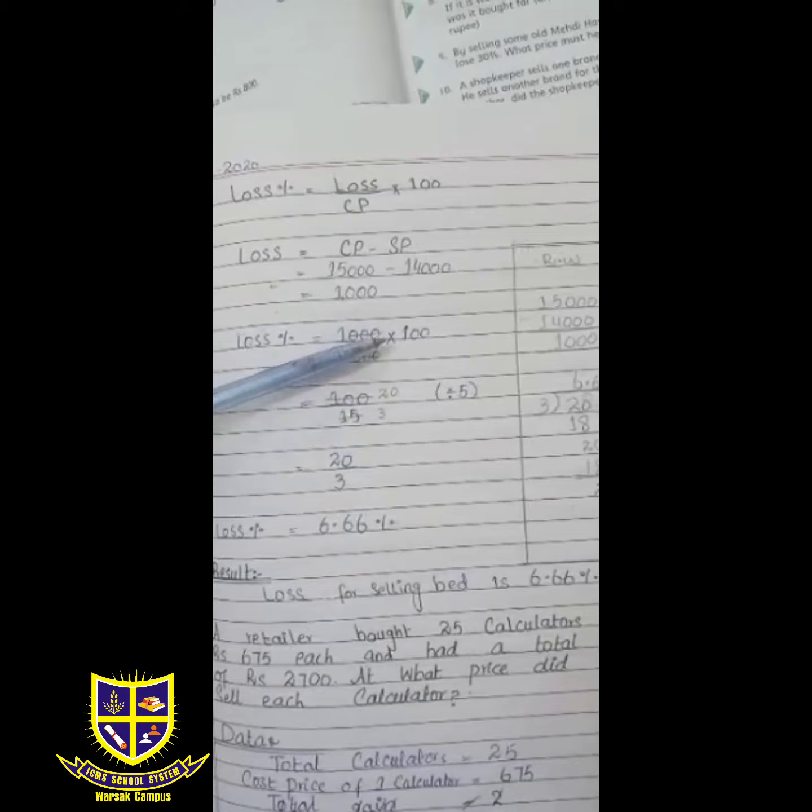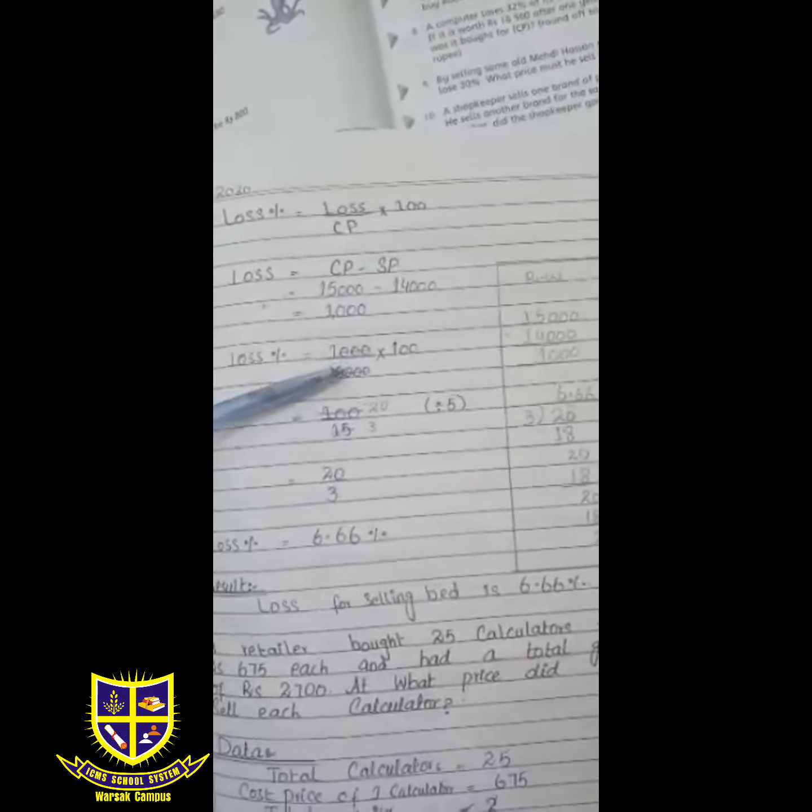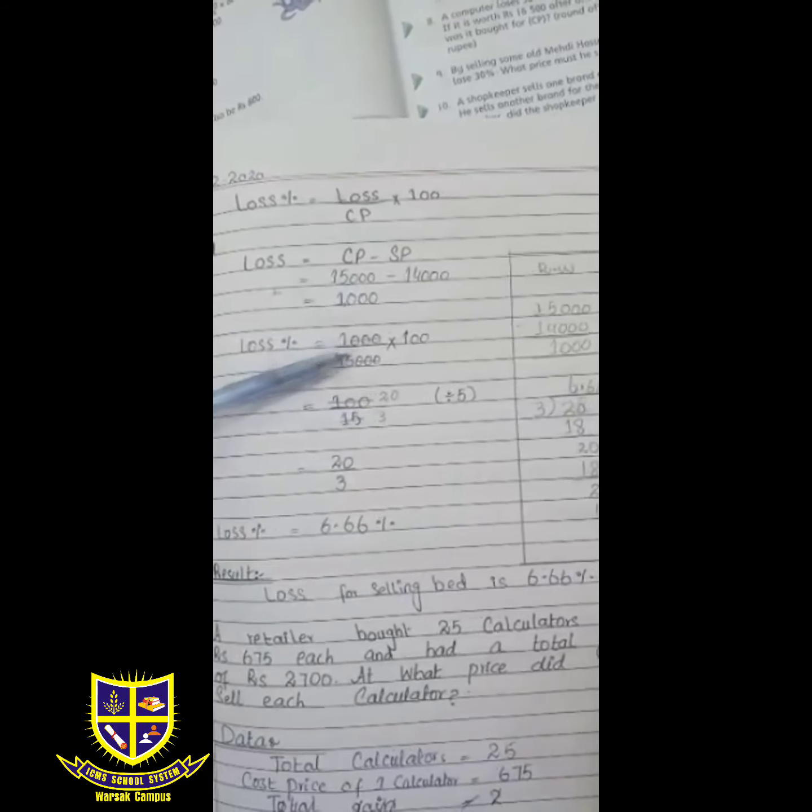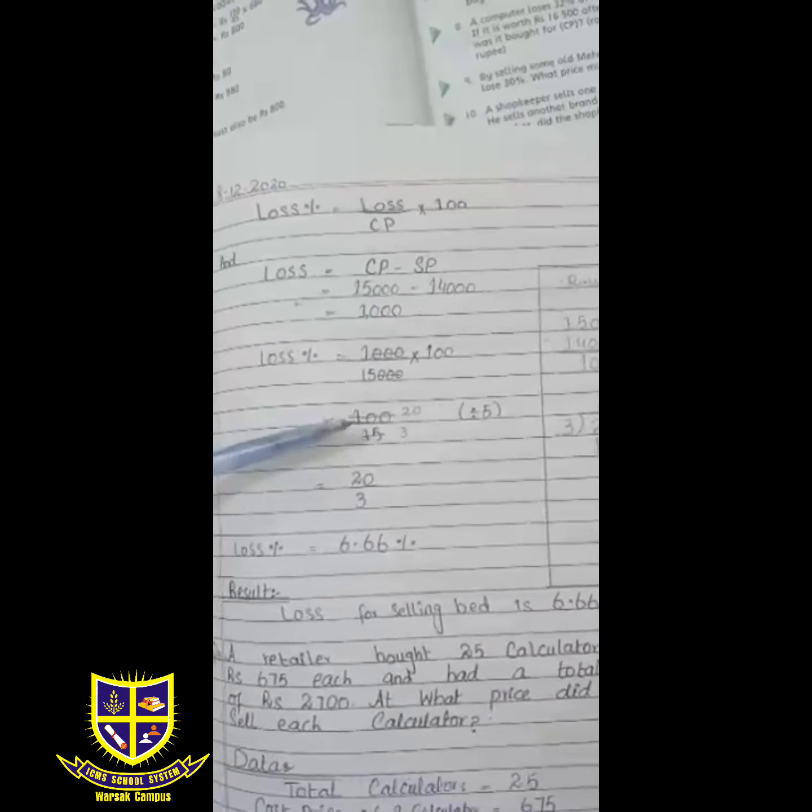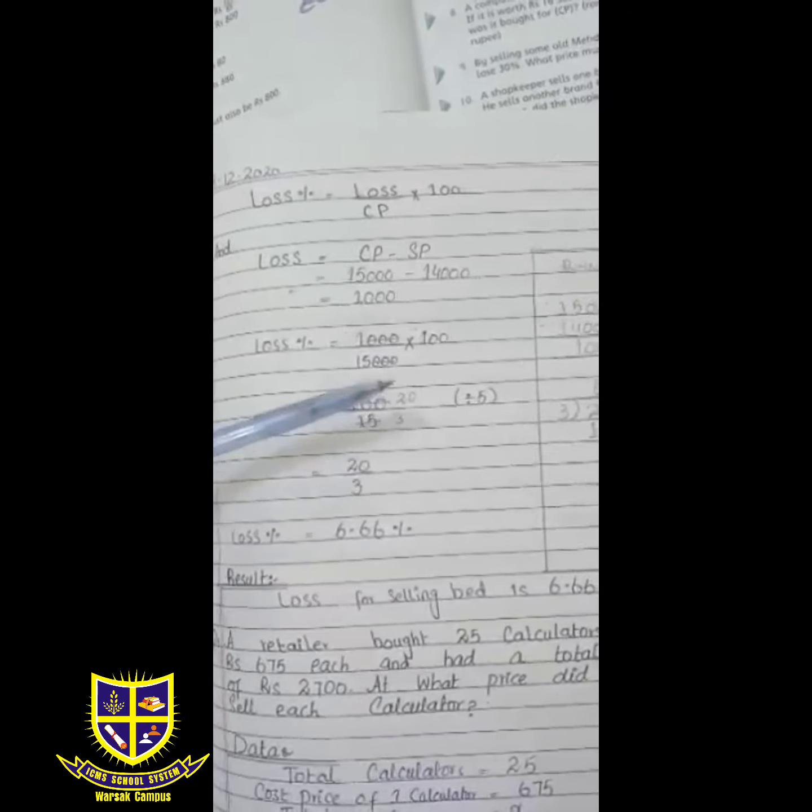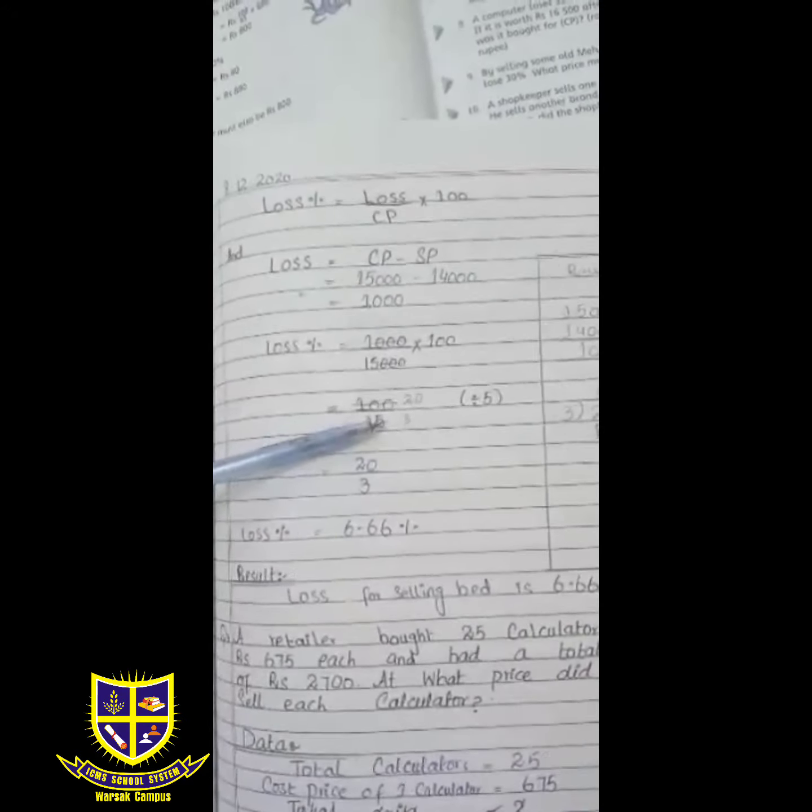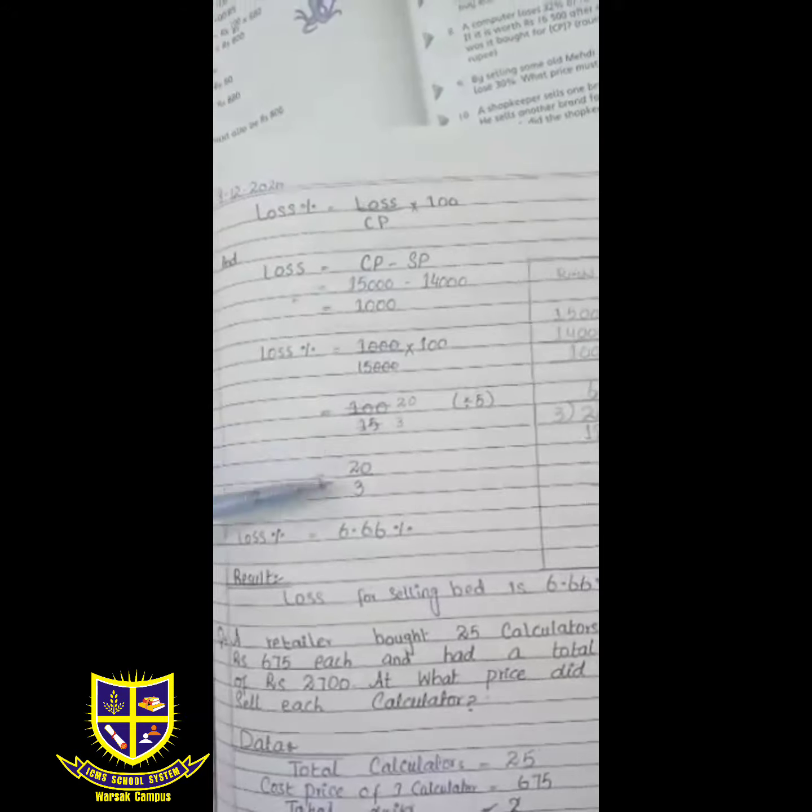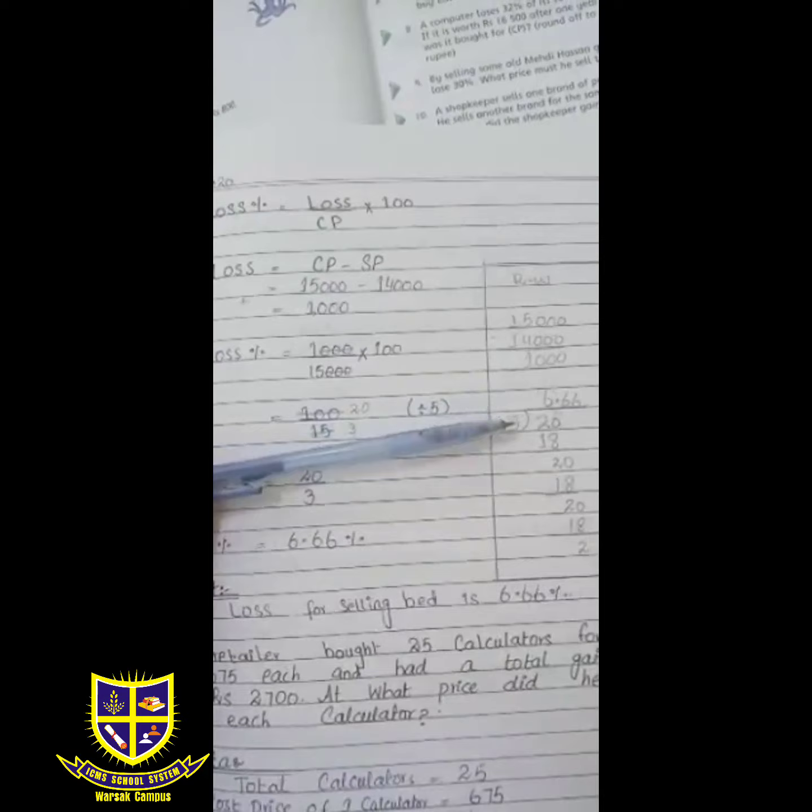Loss percentage: putting in the formula. Loss we have, CP we have. Zero is here cutting, so 1 remains here. 100 we have multiplied by 1, so 100 divided by 15 we have. Answer: cutting 5 with table 5. 5 times 3 is equal to 15, 5 times 20 is equal to 100. 20 by 3 we have as answer.